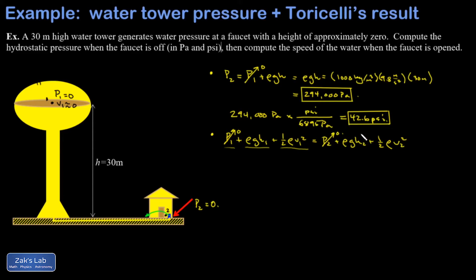And then the height of this faucet that I opened at point 2 is zero. And the kinetic energy of the fluid in the water tower is approximately zero. So I end up with quite the simplification. ρgh1 equals one-half ρV2 squared.